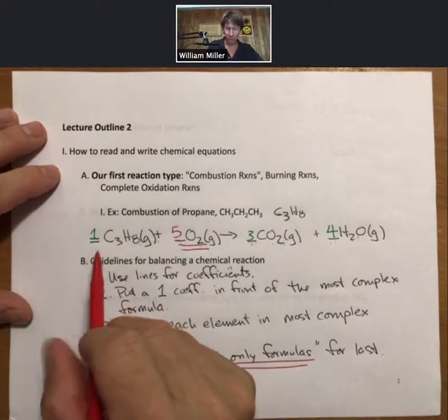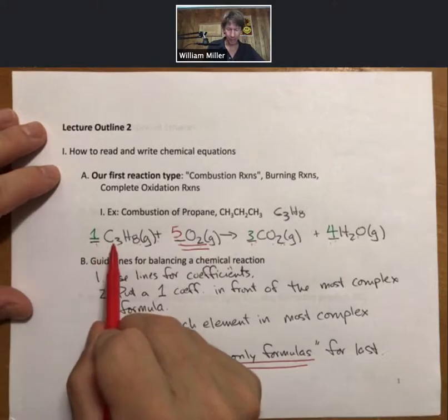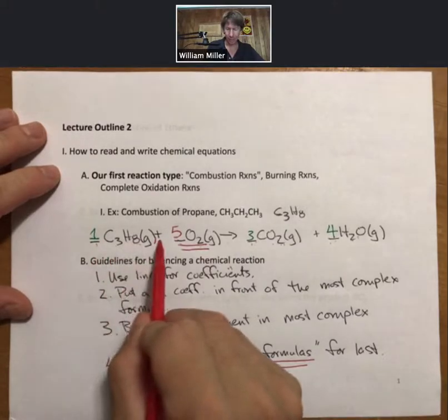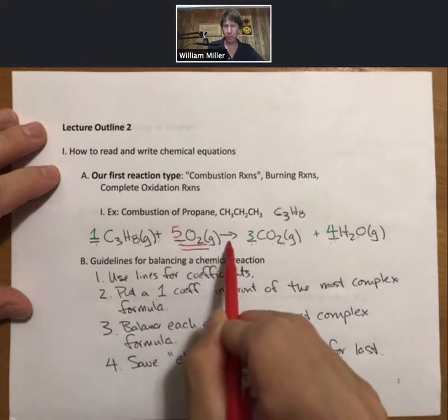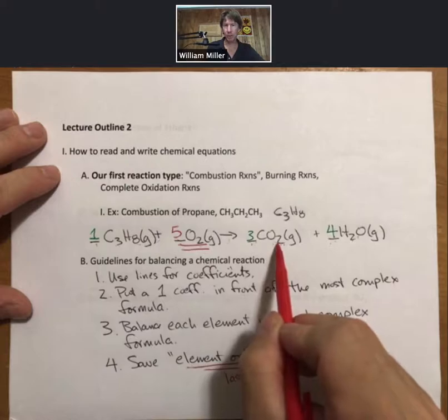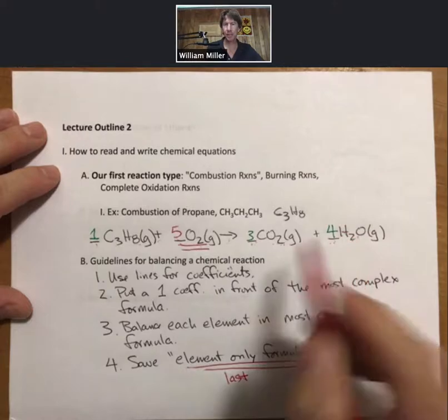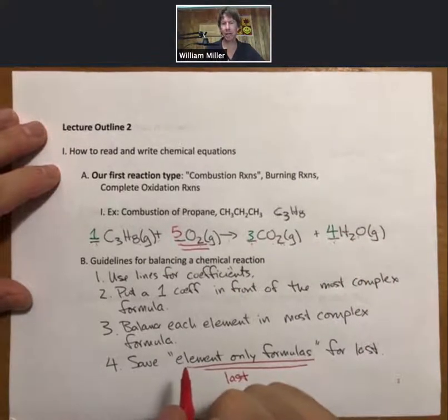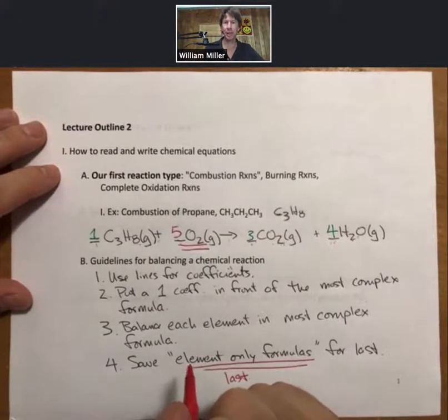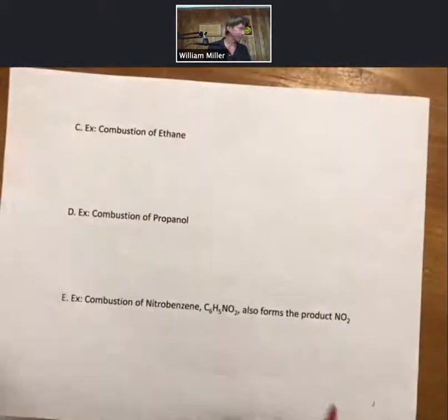We will also need to know the molecular or atomic interpretation as well. Let's do the mole interpretation. That says one mole of propane reacts with five moles of oxygen to produce three moles of carbon dioxide and four moles of H2O. So when I say translate this chemical reaction or chemical equation into English and do both of the interpretations, now you'll know what I mean.